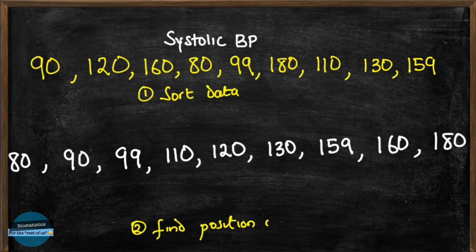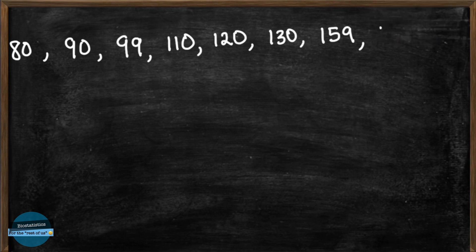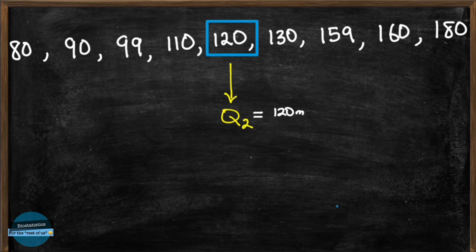Then we find the position of each quartile. It's actually easier to start from the median of the data set and that's Q2. If we look at this data set, we have nine data points. So the median is going to be on the fifth data point which is 120. So our Q2 is 120 millimeters of mercury.